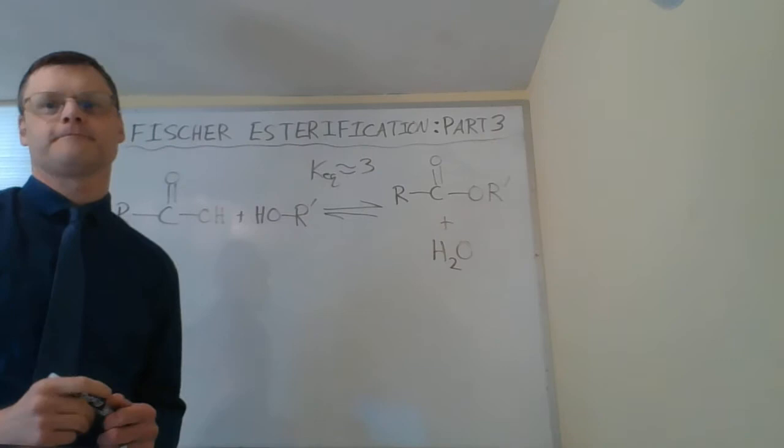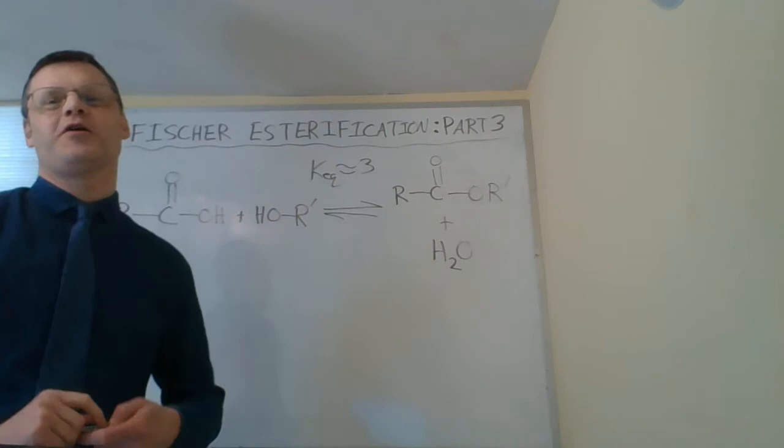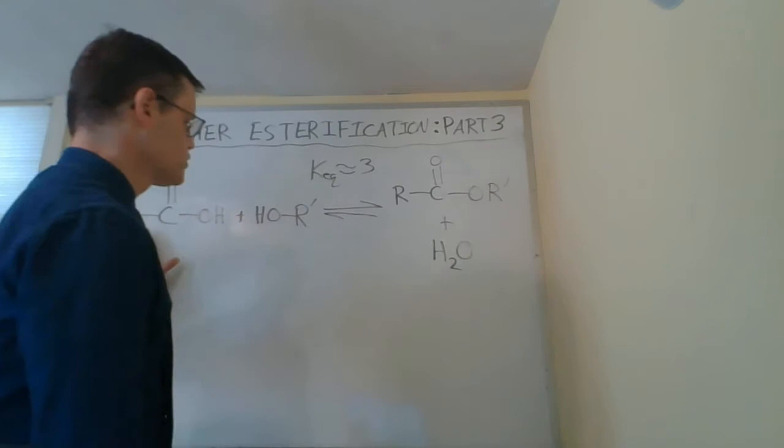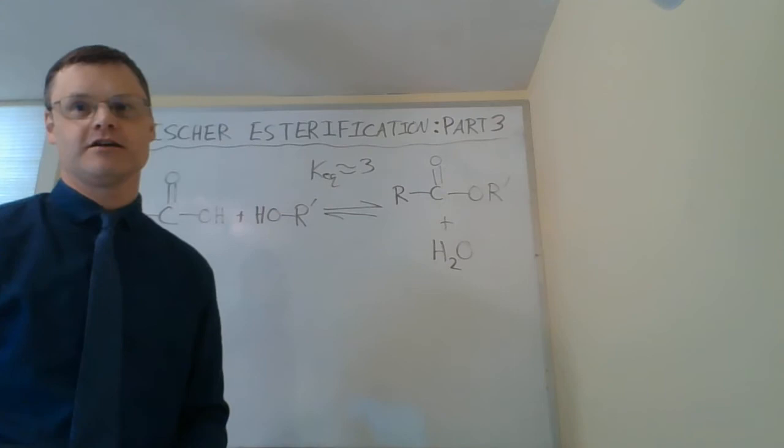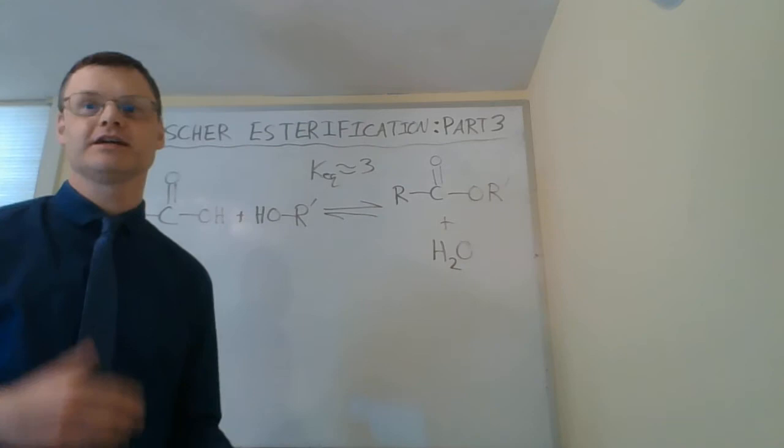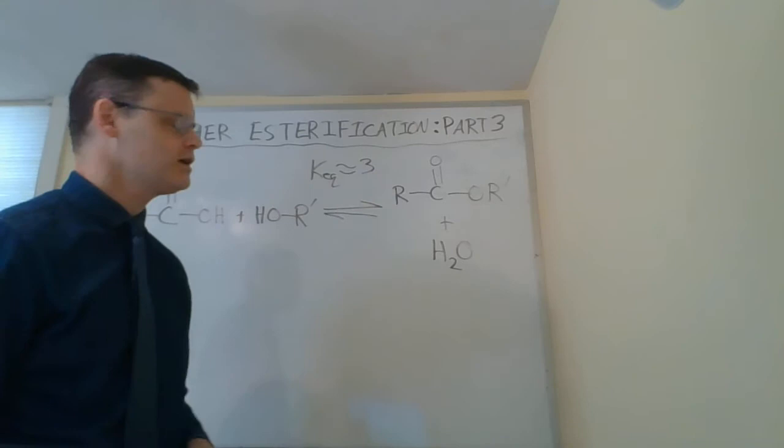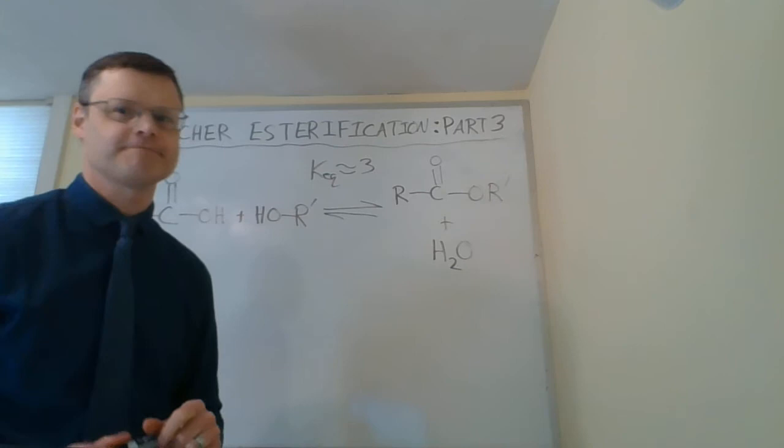If the equilibrium constant were exactly 1, that would mean once the reaction reaches equilibrium, you could have a 50-50 mixture of reactants and products. The problem is we typically are not looking, as organic chemists, to have 50% yields of products. We would like to see 90% yields or things like that. So an equilibrium constant of 3 is a little bit better, but it's still not the high yield that we might like to see.